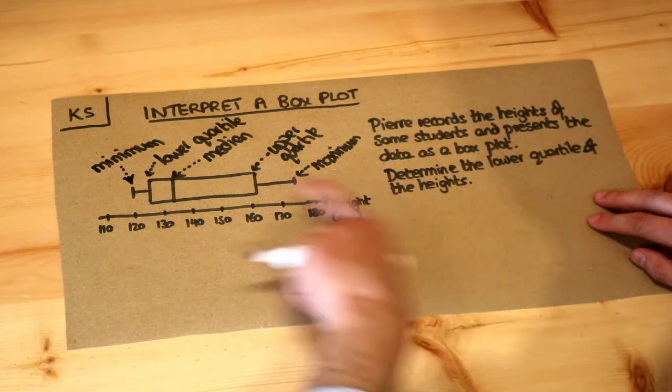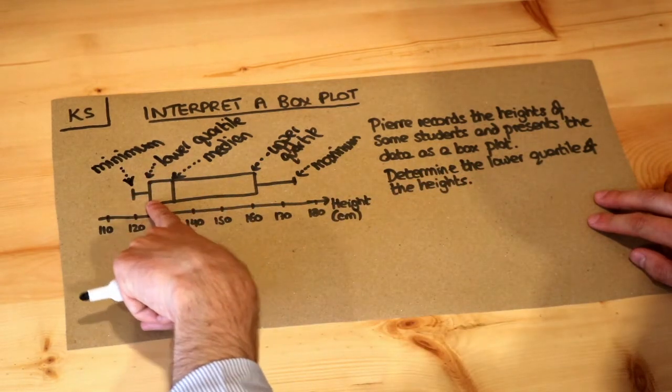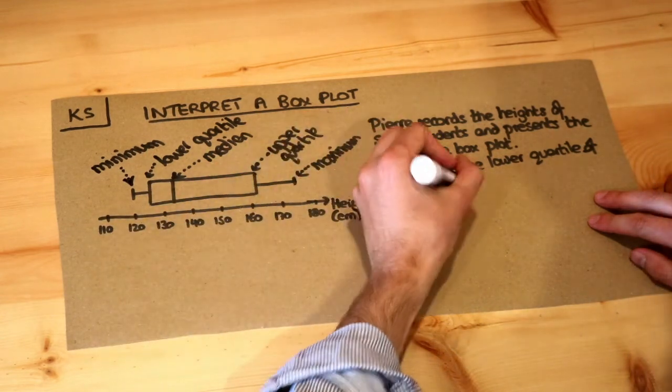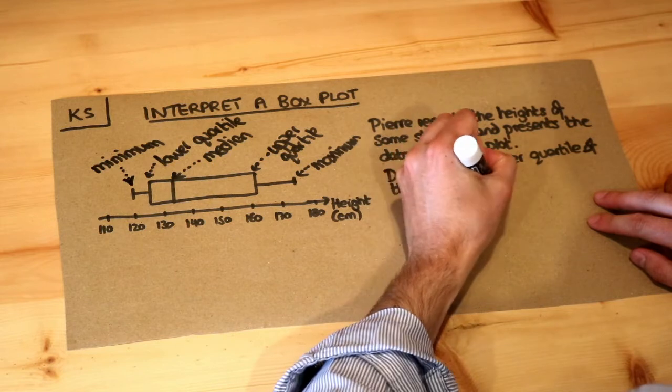Well let's answer the question first. We want to find the lower quartile which is here. That's a value of roughly say 126 centimeters, so the lower quartile is 126 centimeters.